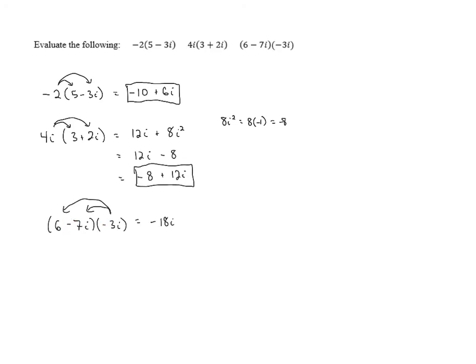And then here, we've got a negative times a negative. Those will cancel out and give us a positive. And 7i times 3i is 21i squared. Again, we've got an i squared, and that's going to make that term negative. So this gives us negative 18i minus 21. And again, we'll rearrange to put this in standard form, putting the real part first and the imaginary part second. And we end up with negative 21 minus 18i.